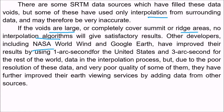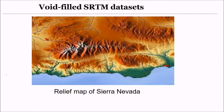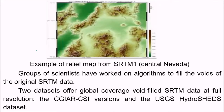Other developers including NASA, World Wind, and Google Earth have improved their results by using 1 arc second data for the US and 3 arc second for the rest of the world in the interpolation process, and have further improved earth-viewing services by adding data from other sources. This is a void-filled SRTM dataset relief map for Sierra Nevada, and this is another example of a relief map from SRTM for the same area — Central Nevada — where groups of scientists have worked on algorithms to fill the voids of the original SRTM data.